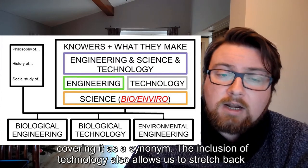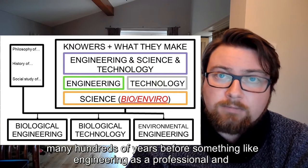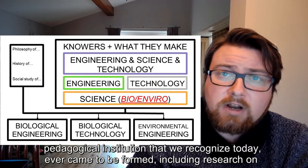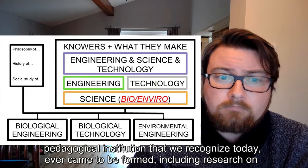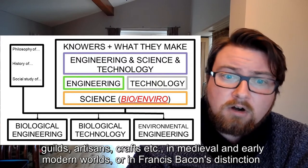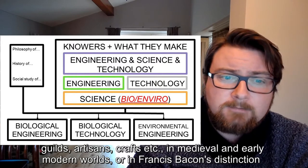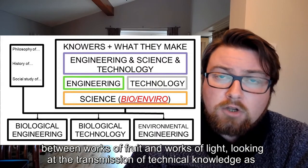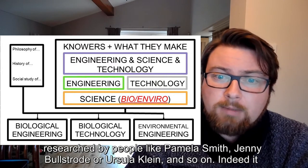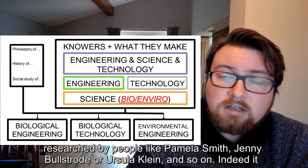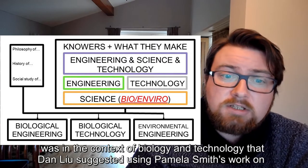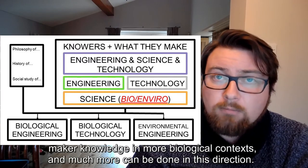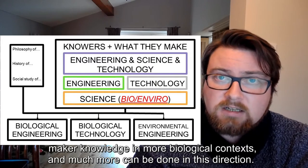The inclusion of technology also allows us to stretch back many hundreds of years before something like engineering, as a professional and pedagogical institution we recognise today, ever came to be formed — including research on guilds, artisans, crafts, and so on in medieval and early modern worlds, or in Francis Bacon's distinction between works of fruit and works of light. Looking at the transmission of technical knowledge, as researched by people like Pamela Smith, Jenny Boldstroke, or Ursula Klein, and so on. Indeed, it was in the context of biology and technology that Dan Liu suggested using Pamela Smith's work on maker knowledge in more biological contexts, and much more can be done in this direction.